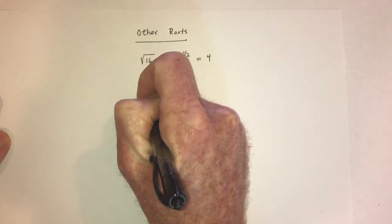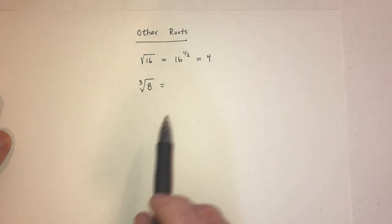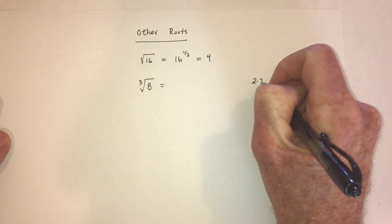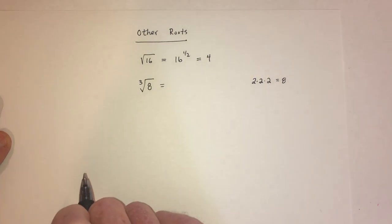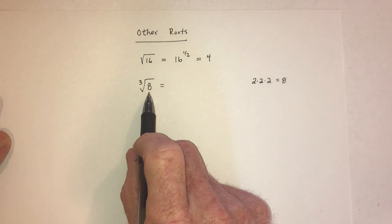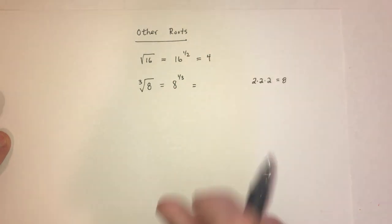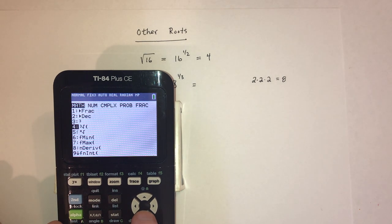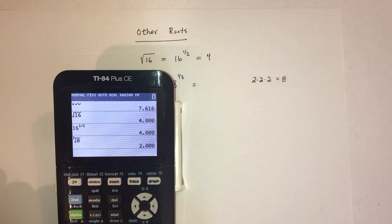With the cube root: this means what number, multiplied by itself three times, gives you 8? For example, 2 times 2 times 2 equals 4 times 2, which is 8. So the cube root of 8 is 2. You can also write this as 8 raised to the one-third power. On the calculator, using the cube root function, the cube root of 8 is 2. And 8 raised to the one-third power also equals 2.